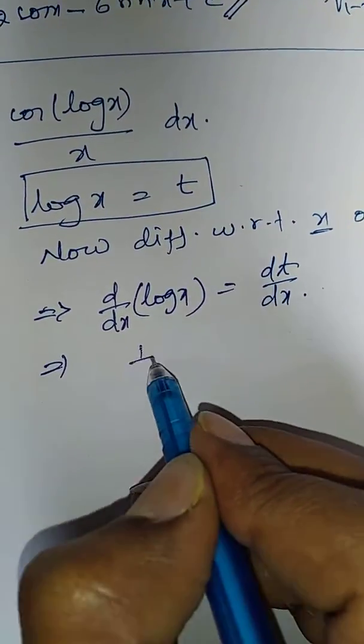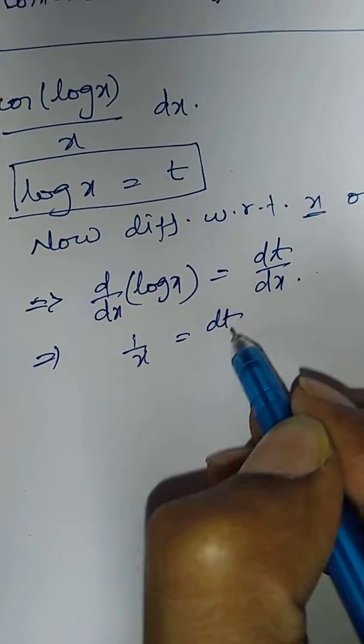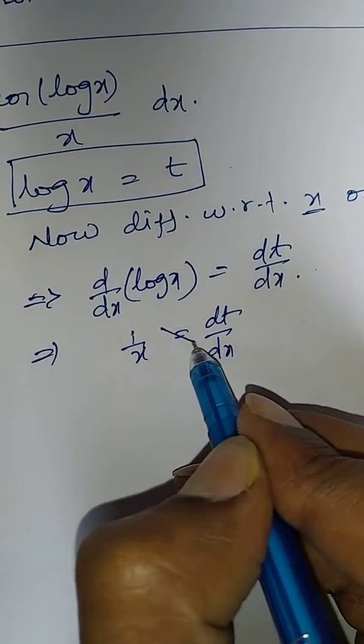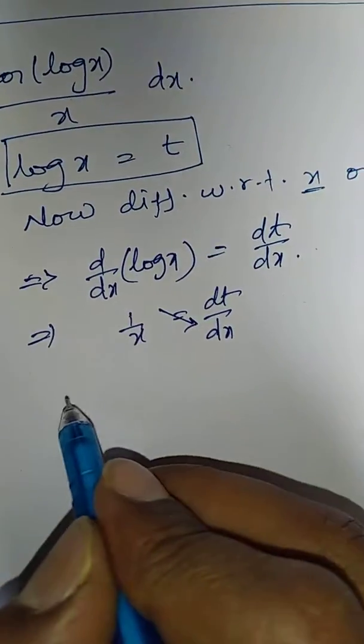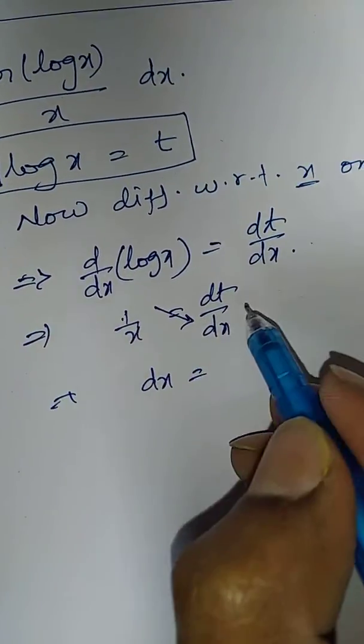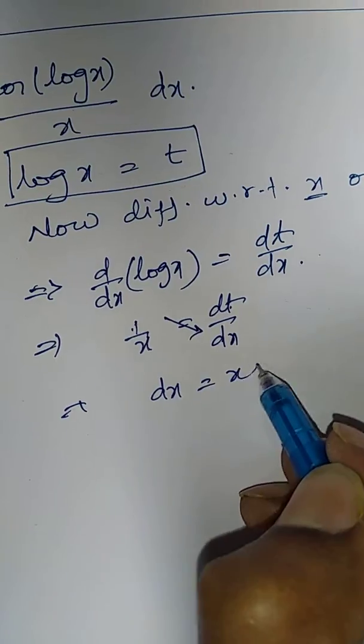D by dx of log x is 1 by x is equal to dt by dx. This is cross multiplication. It is equal to 1 into dx. dx is equal to dt into x, x dt.